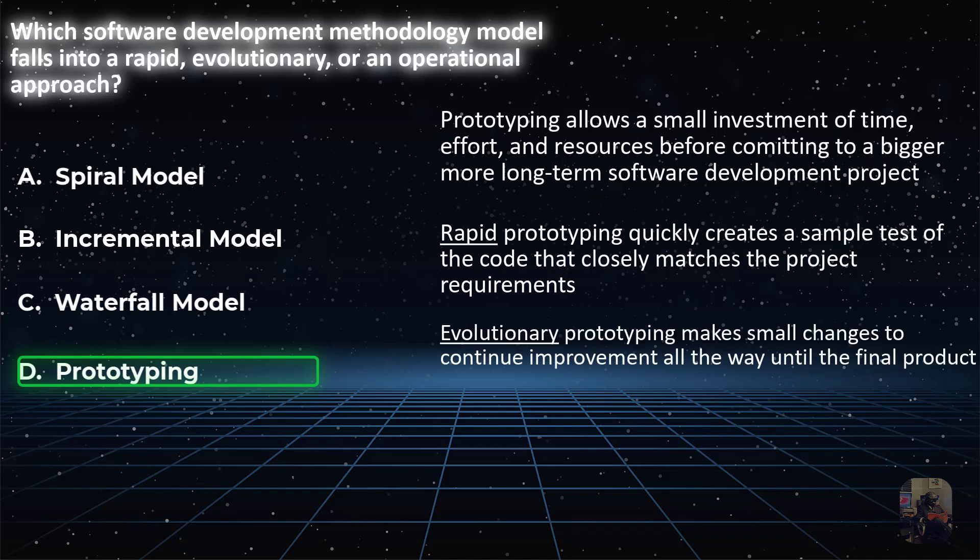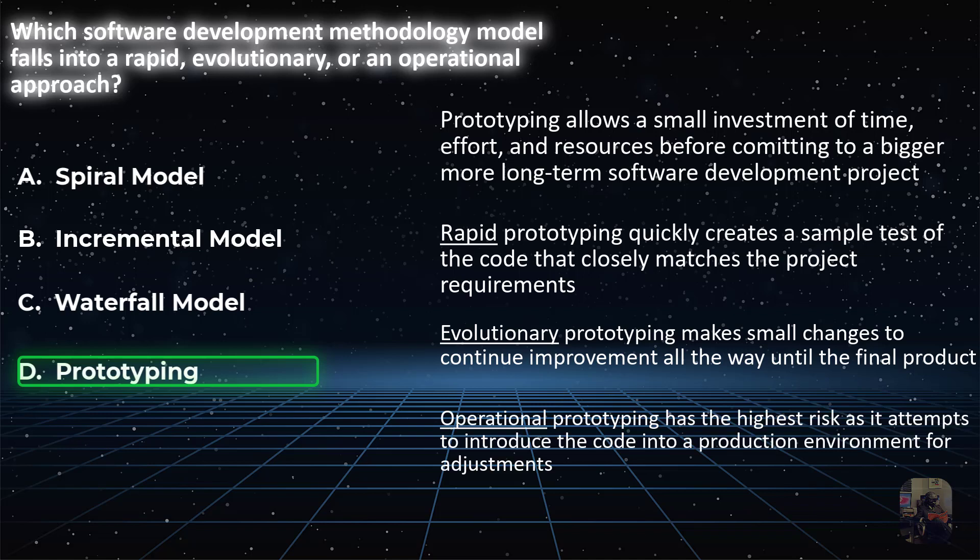Evolutionary prototyping makes small changes to continue improvement all the way until the final product. Operational prototyping has the highest risk as it attempts to introduce the code into a production environment for adjustments.